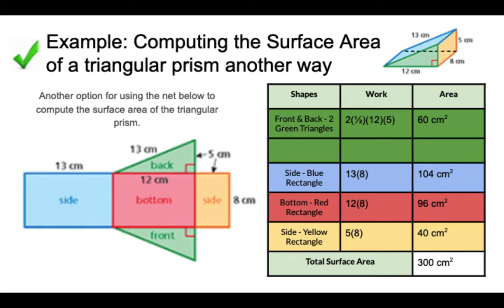This is using congruency as a bit of a shortcut when finding the full surface area of a triangular prism. The congruency here is that your front and back triangles, or your bottom and top triangles depending on how it's positioned, but your two triangular bases are always going to be congruent to each other.